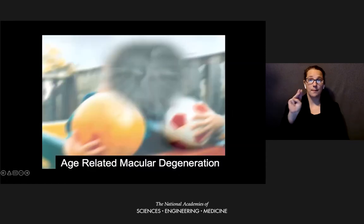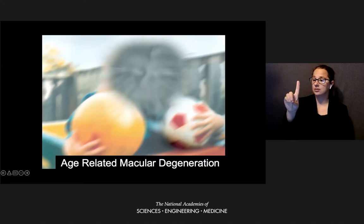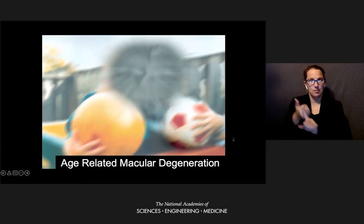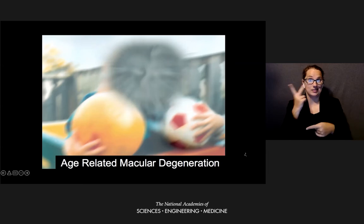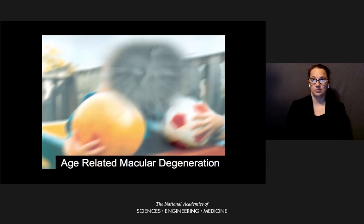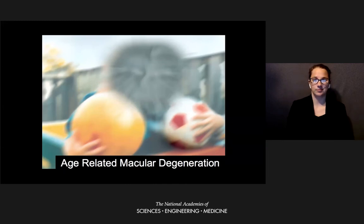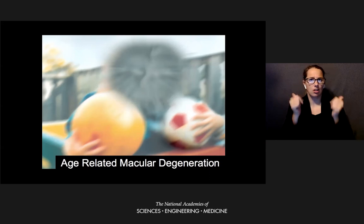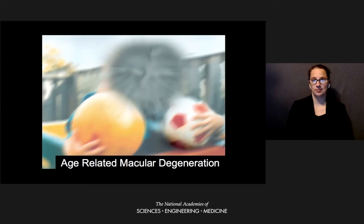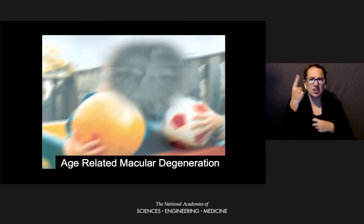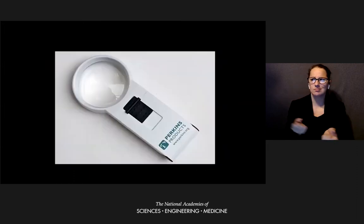For someone who has macular degeneration, which is yet another condition that can cause low vision — a very common condition, especially for older adults — they might see the image like this. Macular degeneration affects your ability to see in the center of your visual field, making it more difficult to see faces. There are many different ways in which people's vision can be affected, and different degrees, and it's actually very difficult to understand exactly what people can see. Perception is a very complicated thing.